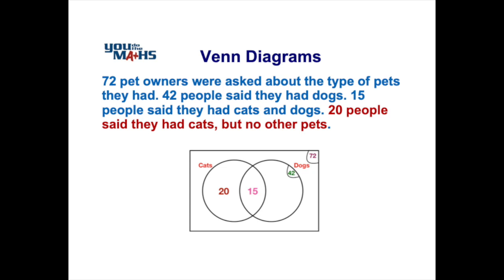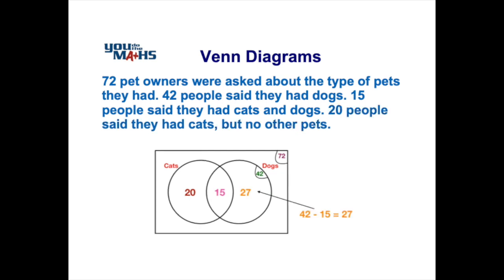Now we can fill in the remaining parts of the Venn diagram. We know that 42 people own dogs and there are 15 people that own cats and dogs. If we subtract 15 from 42 we get 27, which is the number of people that own dogs only. We've now completed the numbers inside the circles. Note that the 42 is just there to help with calculations, while the 15 and 27 are significant for answering questions later.